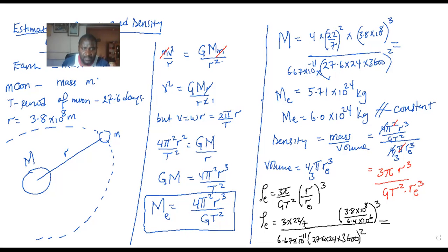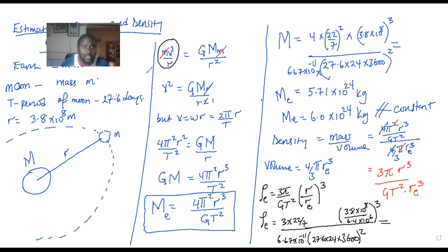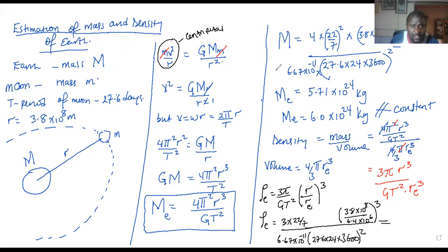A student asks: why did you equate mv² over r to G·M·m over r²? The teacher responds: this is the equation for centripetal force. Were you attending the centripetal lessons? The student says no. The teacher says to visit the YouTube channel for circular motion to find out about centripetal force. This is called centripetal force — it keeps bodies moving in circular paths. Looking at this image, Mercury, Venus, Earth, Mars, the asteroid belt, and Jupiter each have their own circular orbit around the sun.